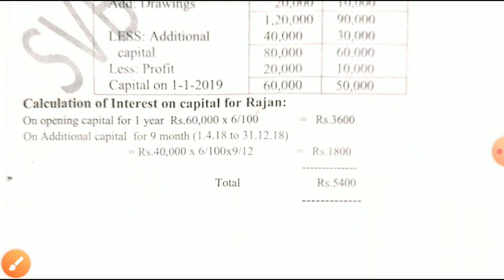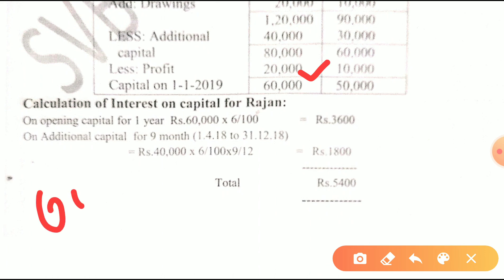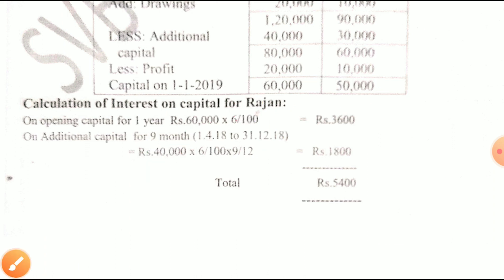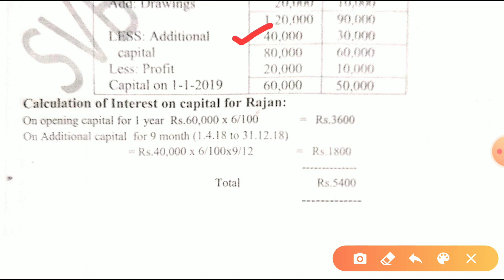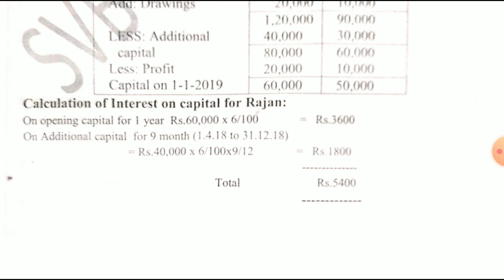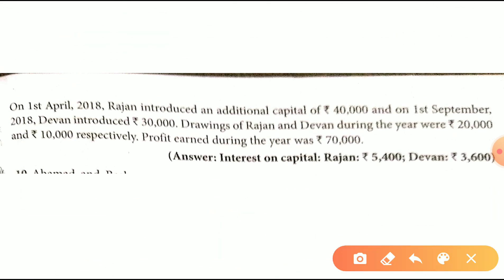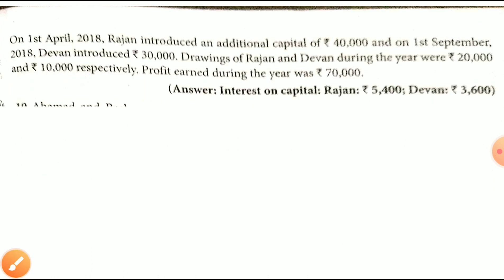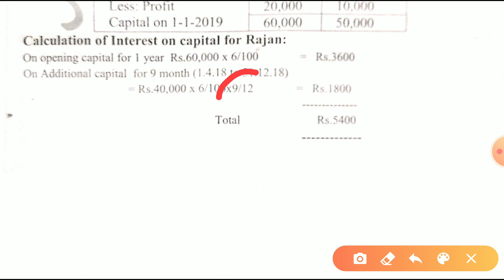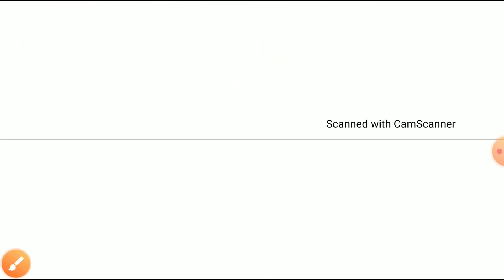Now we will calculate interest on capital. Rajan's opening capital is 60,000. So 60,000 into 6 divided by 100 gives 3,600. For additional capital: Rajan introduced additional capital of 40,000 on 1st April. Counting the months — April, May, June, July, August, September, October, November, December — that is 9 months. So 40,000 into 6 divided by 100 into 9 divided by 12. Devan's opening capital is 50,000, so 50,000 into 6 divided by 100 equals 3,000.